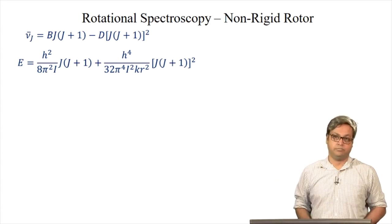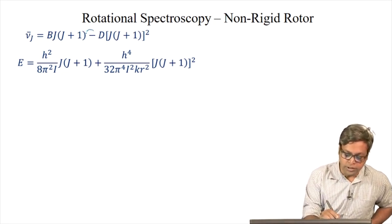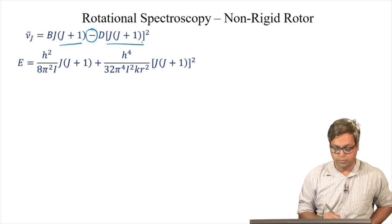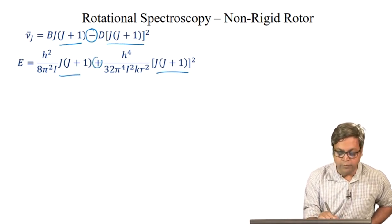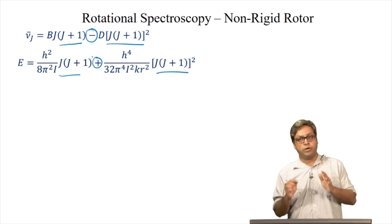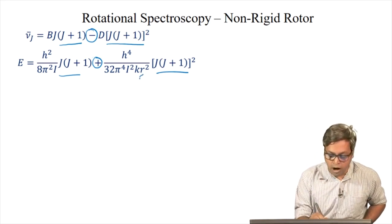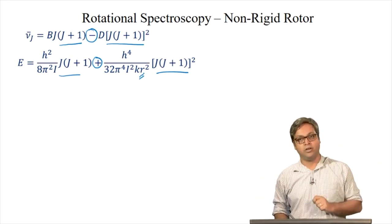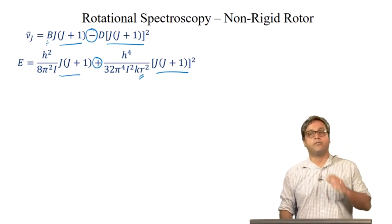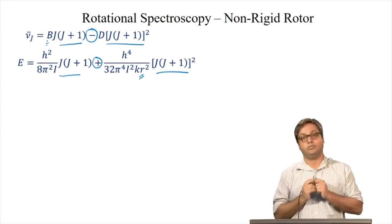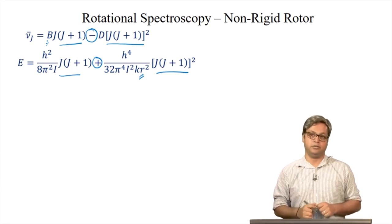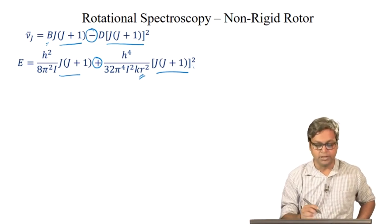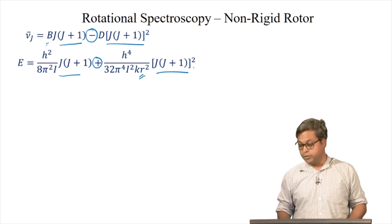However, there is a sign mismatch: in the centrifugal distortion expression we have a negative sign, but here we have a positive sign. We should remember that R here is the extended bond length due to the centrifugal force, whereas B was obtained from the rigid rotor with bond length R₀. Since R and R₀ are related, we can express this equation in terms of R₀ by taking an additional approximation.